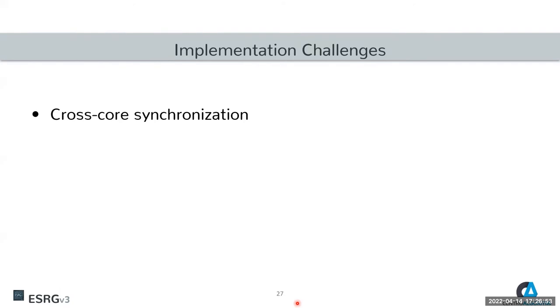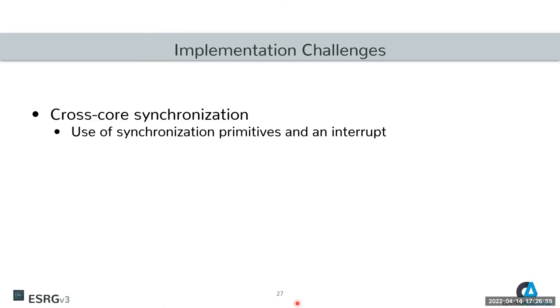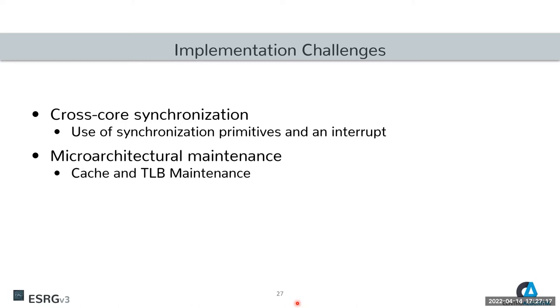There are a few implementation challenges we had to overcome. The first is cross-core synchronization: we must use synchronization primitives and interrupts to make sure all cores are halted before running a zone. The second challenge is microarchitectural maintenance — cache maintenance and TLB maintenance — which we evaluated deeply, ensuring we have as little performance impact as possible.